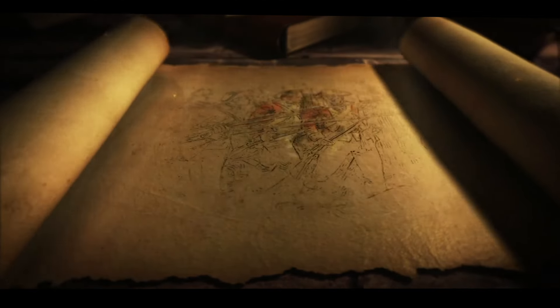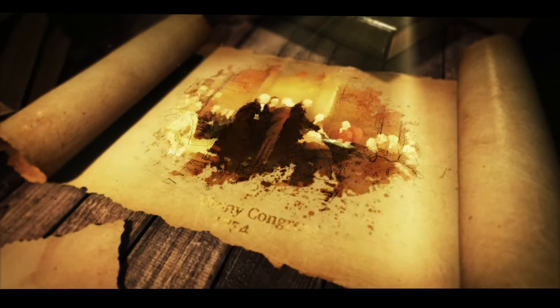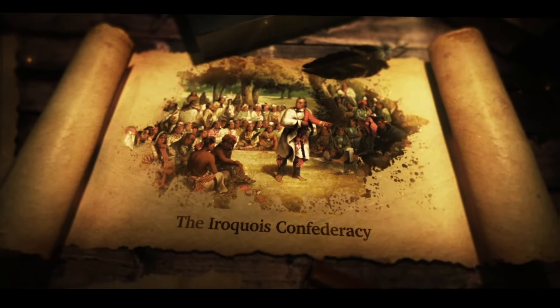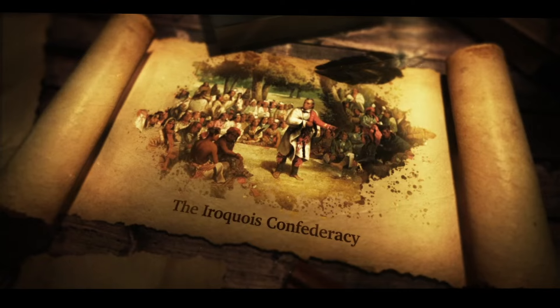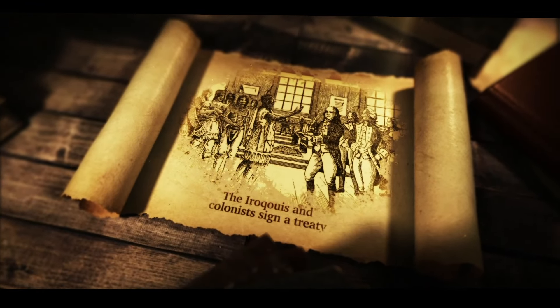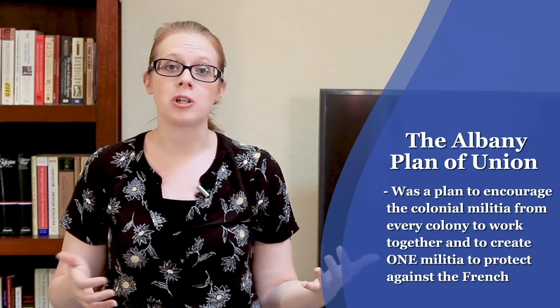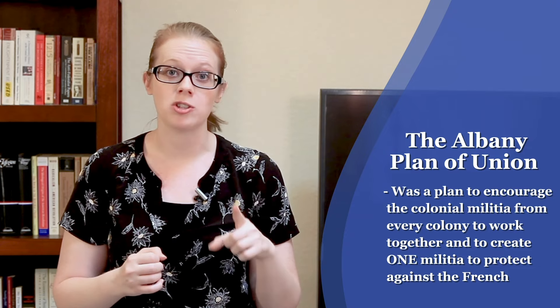The Jumanville incident and the Battle of Fort Necessity were the sparks that ignited the French and Indian War. Now at war, colonists knew it would be some time before reinforcements could arrive from Britain. Representatives from seven of the 13 colonies agreed to meet in Albany, New York. They planned to convince the Iroquois Confederacy, a group of local Native American tribes, to join the British colonists in fighting the French. The representatives also created the Albany Plan of Union, which encouraged the colonial militias to work together to create one militia to protect against the French.